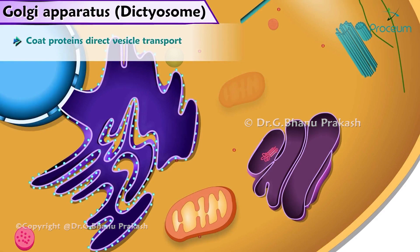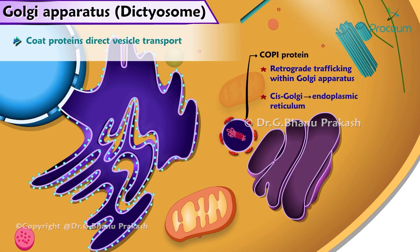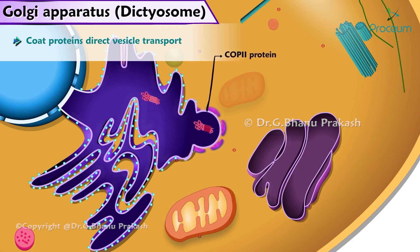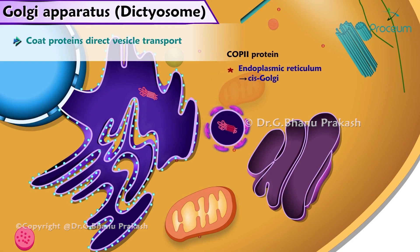Now let's look at some of the coat proteins used in direct vesicle transport. The first is the COP1 protein, which is used in retrograde transportation of vesicles — for example, retrograde trafficking within the Golgi apparatus, and in the cis-Golgi transfer to the endoplasmic reticulum. The COP2 protein is used in anterograde transportation of vesicles — for example, the transfer from the endoplasmic reticulum to the cis-Golgi.